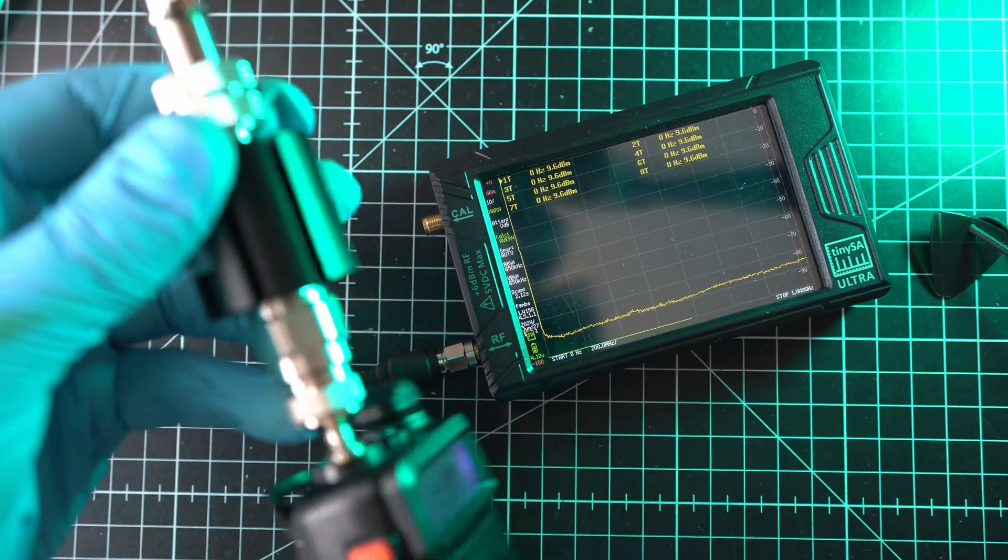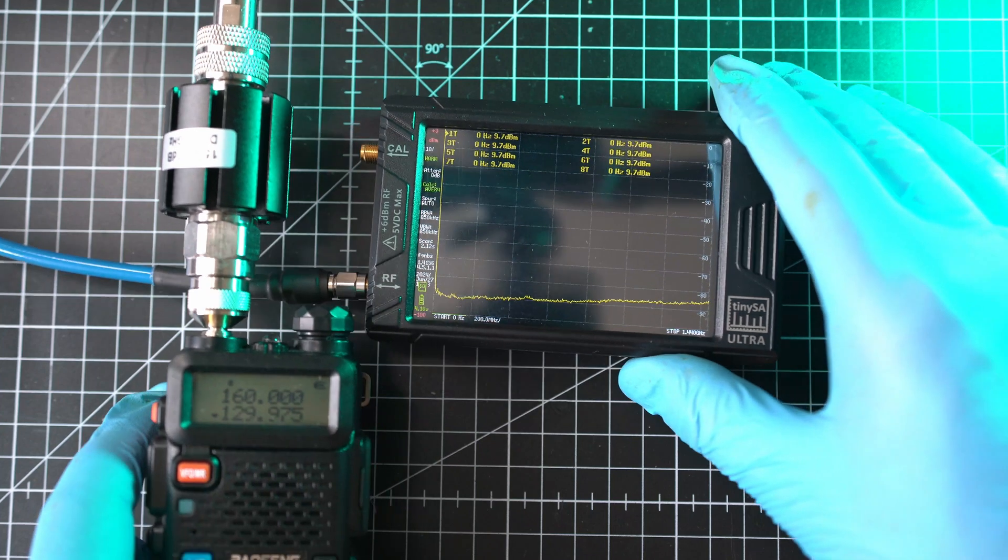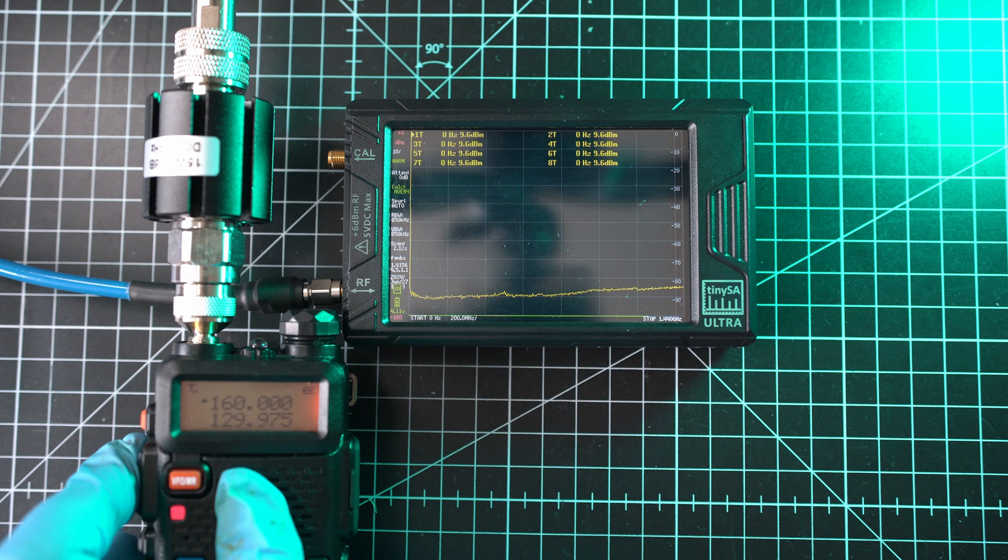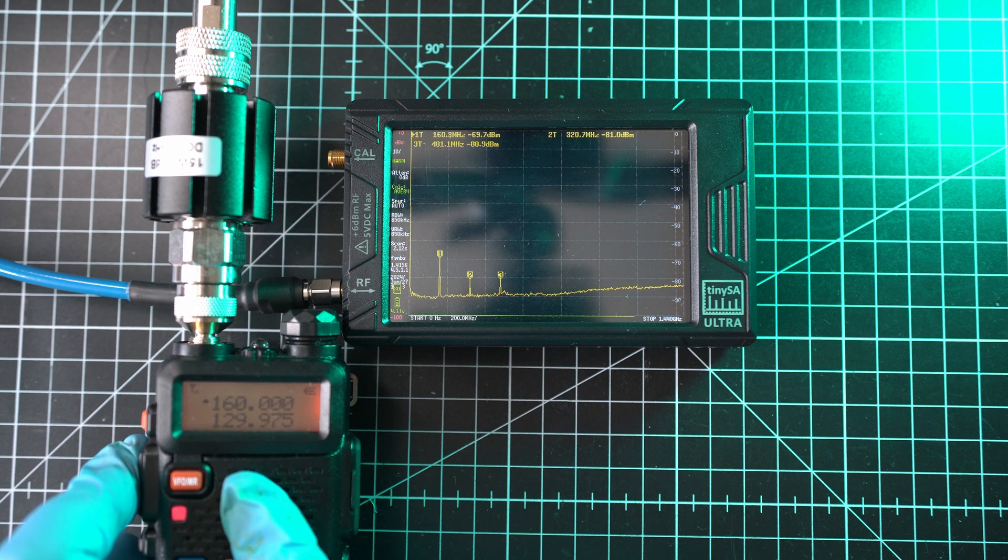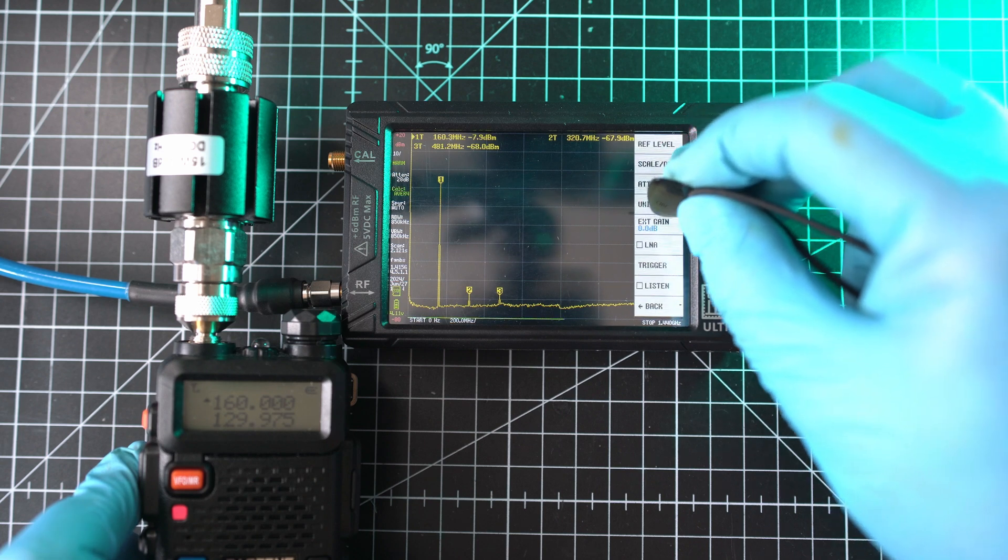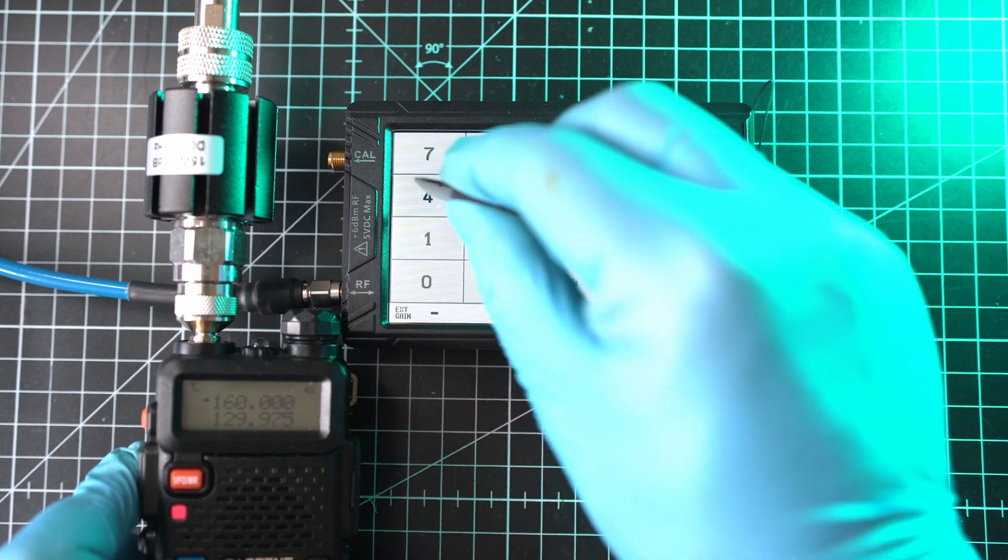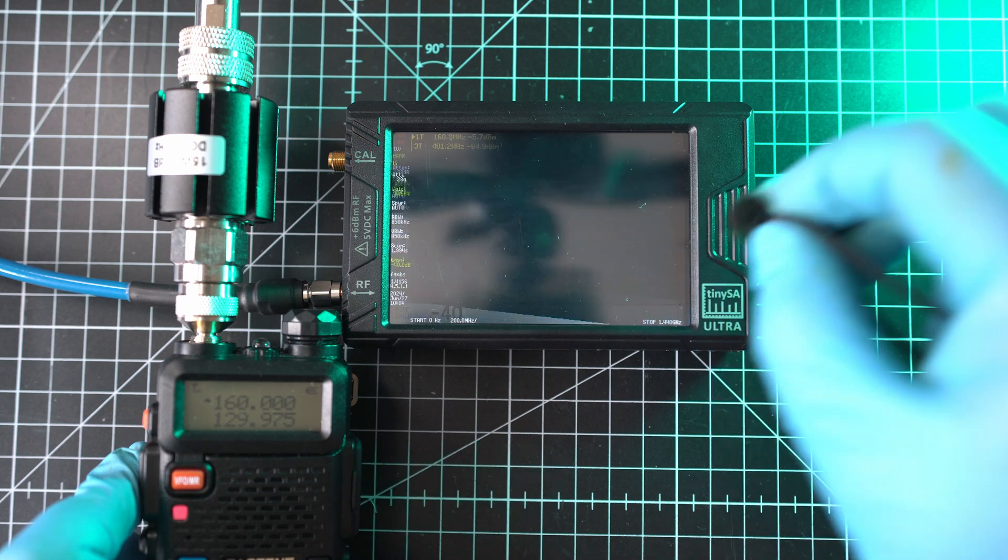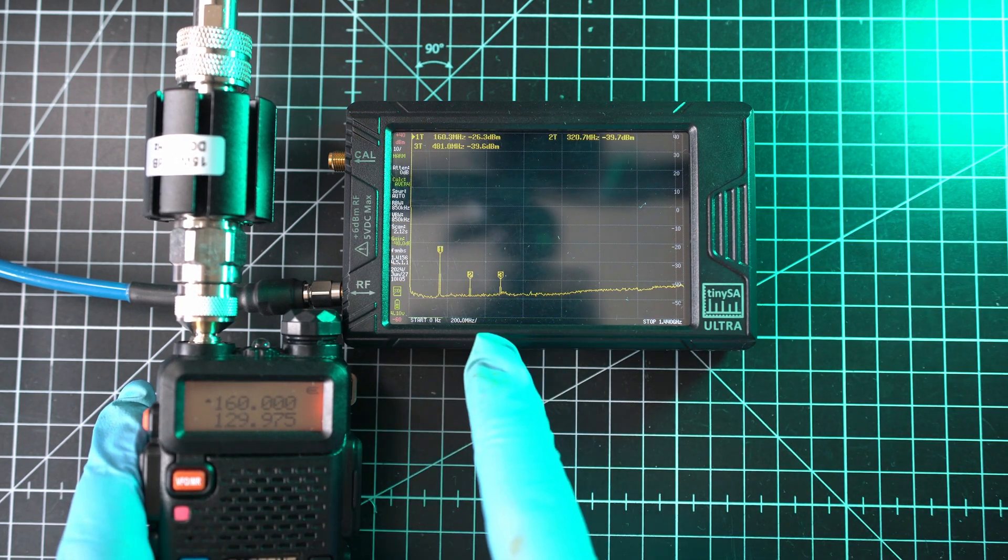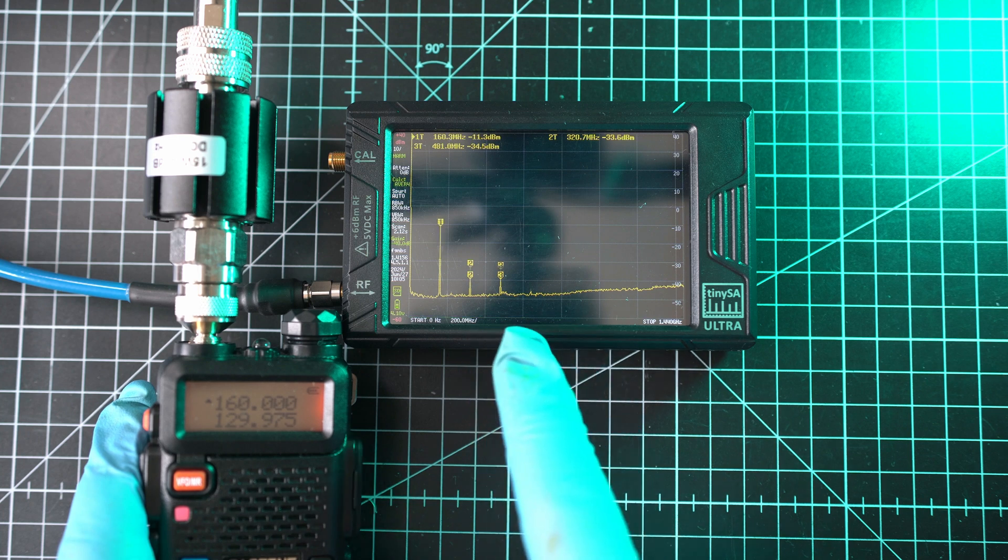Now time for Baofeng UV5R and let's transmit on 160 MHz. I'll have to set 40 dB attenuator. Menu, level, external gain, and here negative 40 times 1. That's my 40 dB attenuator. So once again, transmitting on 160 MHz.